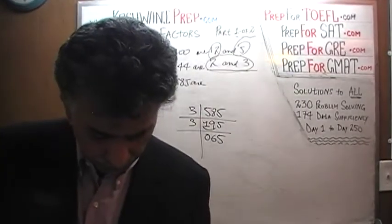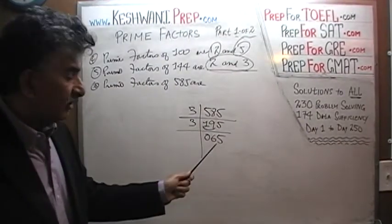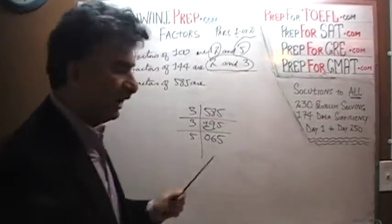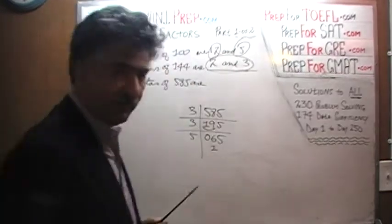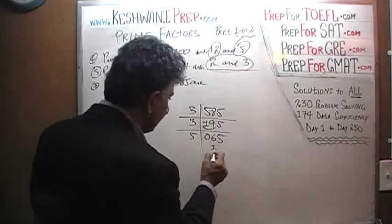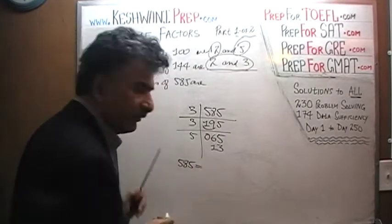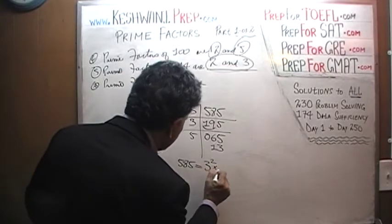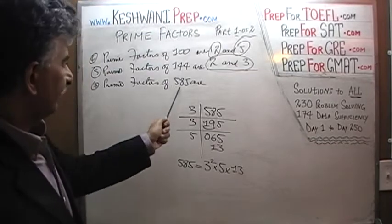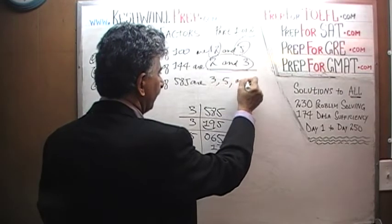We can no longer divide by 3 because 6 plus 5 is 11, and 11 is not divisible by 3. So now we divide by 5. How many 5's in 6? 6 has one 5; the remaining 1 joins the 5 to become 15, and 15 has three 5's. We get 13. So 585 equals 3 squared times 5 times 13, and therefore the prime factors of 585 are 3, 5, and 13.